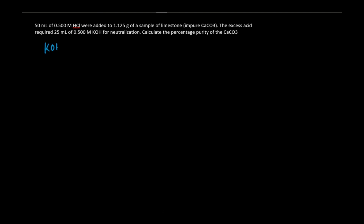Balanced equation. We have potassium hydroxide reacting with HCl to give us potassium chloride plus water. Checking the balanced equation: one potassium, one oxygen, two hydrogen, one chlorine on each side. The equation is balanced.